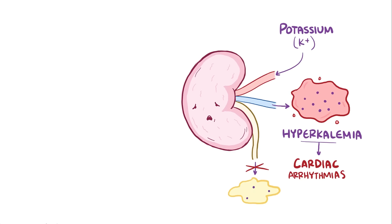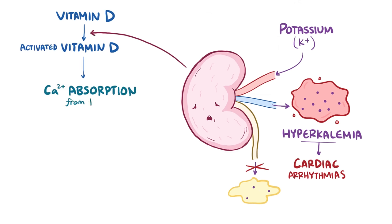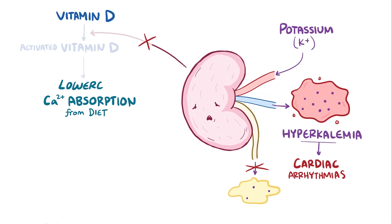Another key role of the kidneys relates to balancing calcium levels. Normally the kidney helps to activate vitamin D, which then helps to increase absorption of calcium from the diet. With chronic kidney disease though, there is less activated vitamin D, so less calcium is absorbed into the blood, which results in hypocalcemia, low calcium levels.